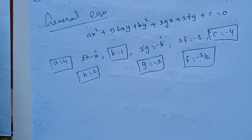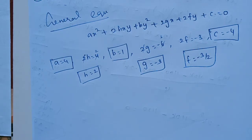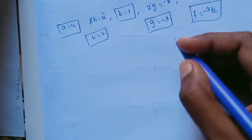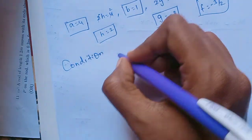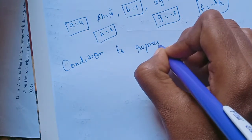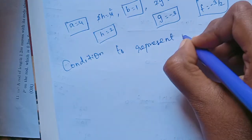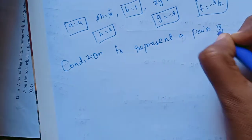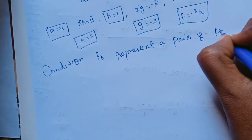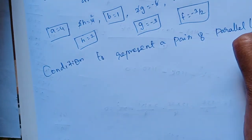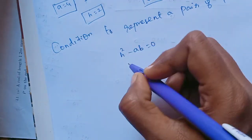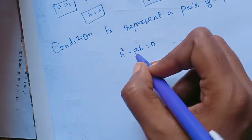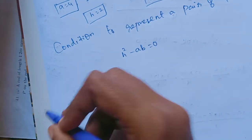To prove the equation represents a pair of parallel lines, we use the condition: H² - AB = 0. This is the condition to represent a pair of parallel lines.